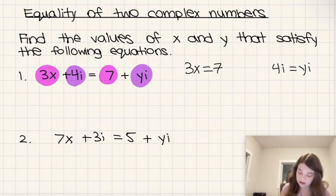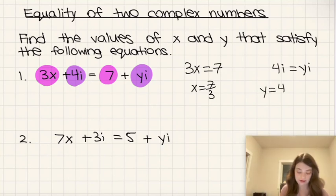So for this first one we can divide both sides by 3 and get that x is equal to 7 over 3. And then for the imaginary parts, we can divide both sides by i and get that y is just equal to 4 here.